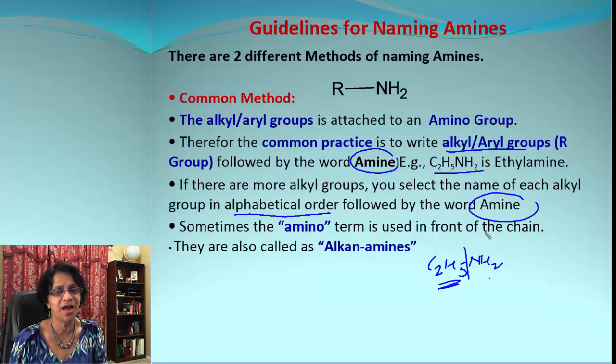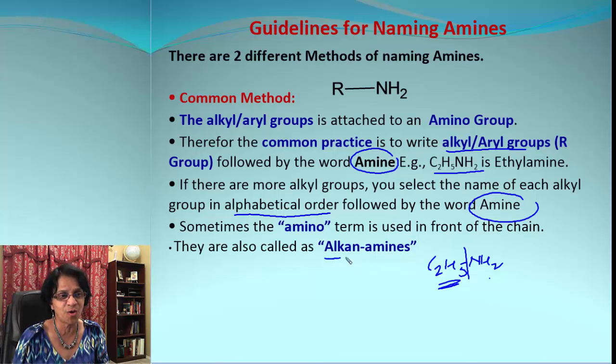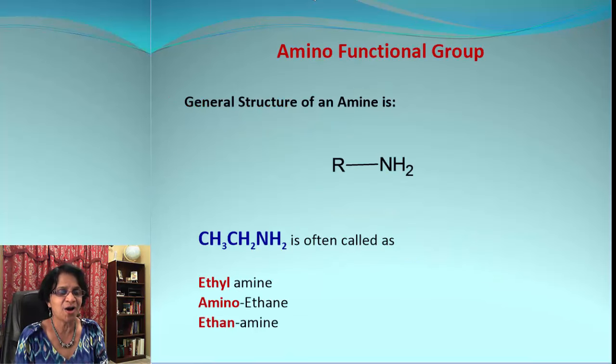Sometimes people just use the amino word in the beginning and you end the chain as it is, so it could be aminomethane, aminoethane, and so on. The third method is the IUPAC method. What we do is from alkane we remove that E and we take the name of that alkane without E and we add the word amine there.